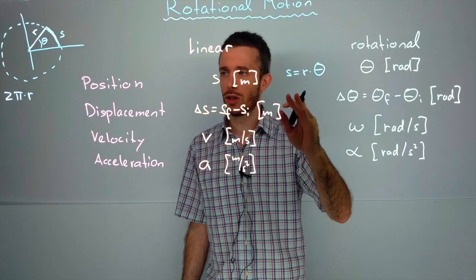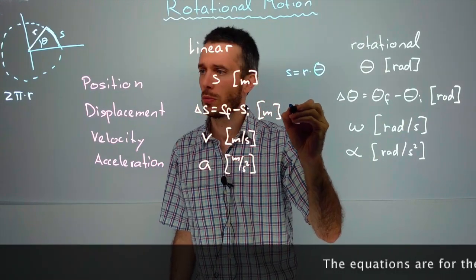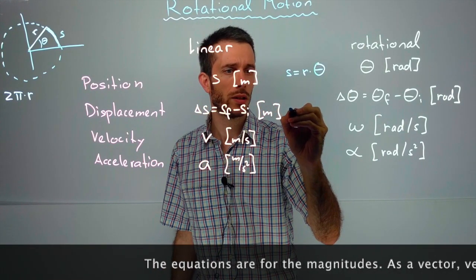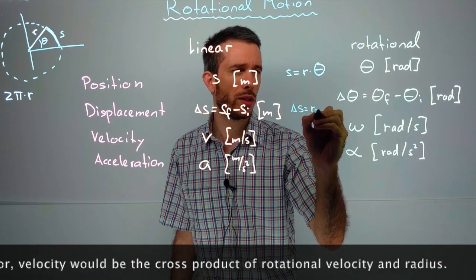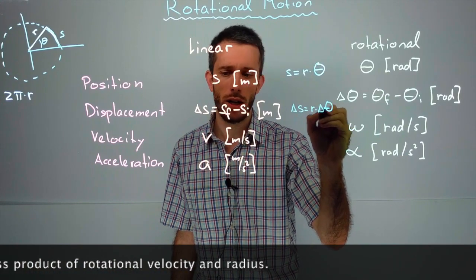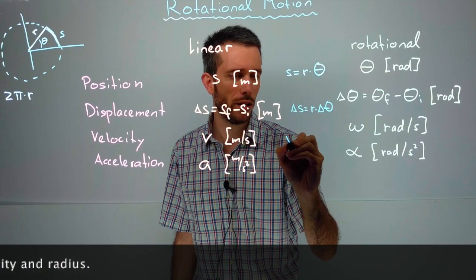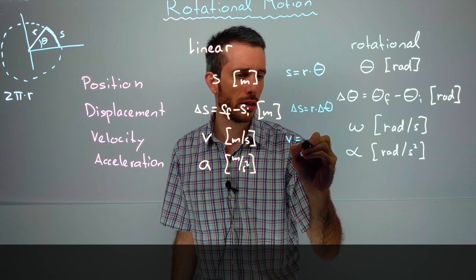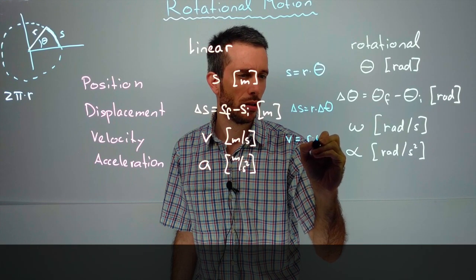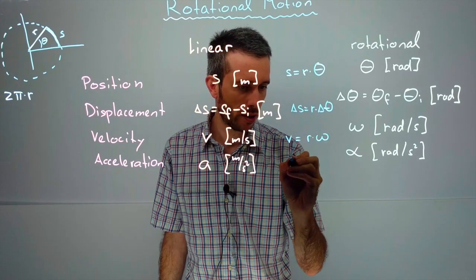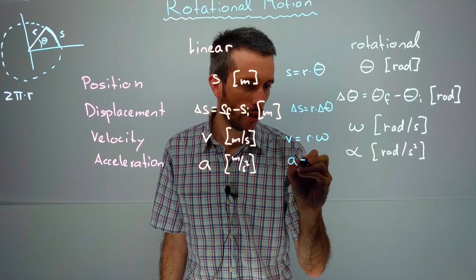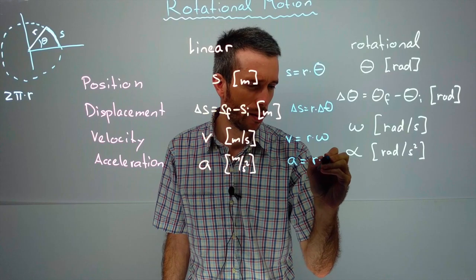As we had it for position we're going to get the same thing for displacement. Displacement delta s is r times delta theta. For velocity, linear velocity gives us r times omega. And for linear acceleration if I follow the same pattern, a equals r times alpha.